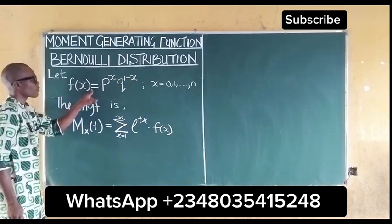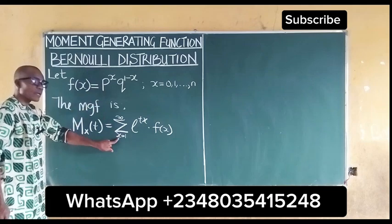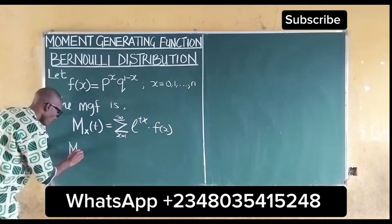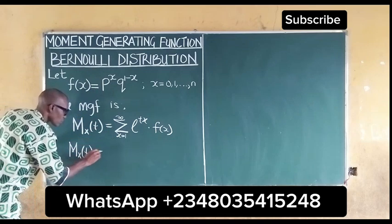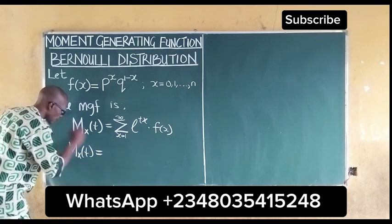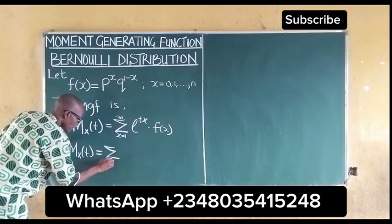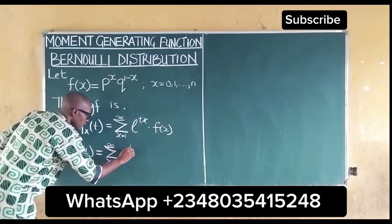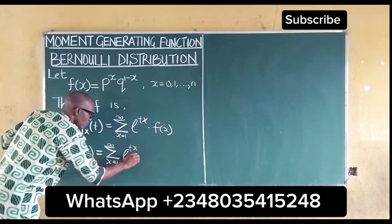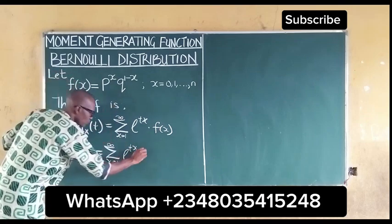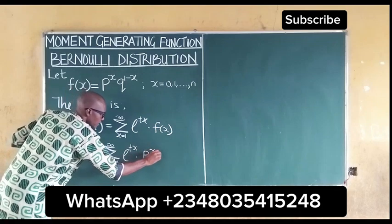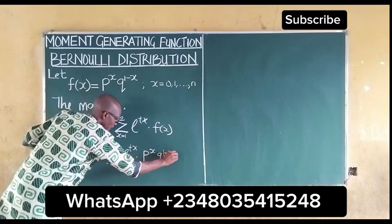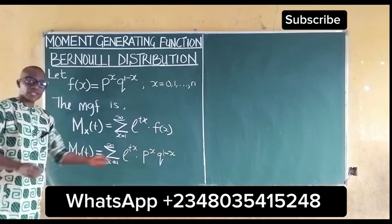Substituting the PDF for the Bernoulli distribution into the moment generating function, we have M(t) equal to the summation of x from 1 to infinity of e^(tx) multiplied by the PDF, which is p^x times q^(1 minus x).